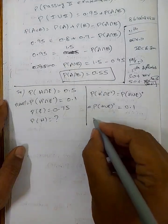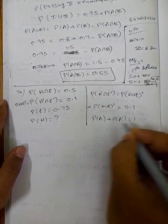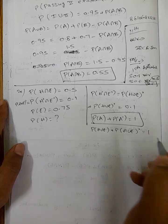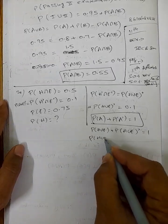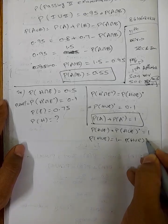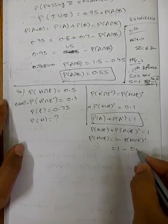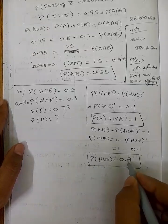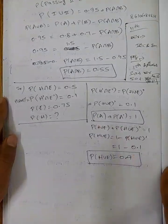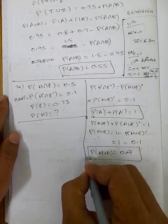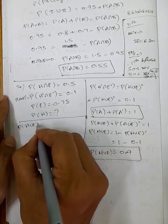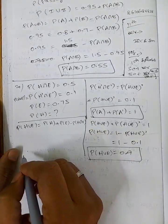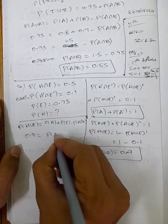We know that P of A plus P of A dash equals 1. So, P of H union E plus P of H union E whole dash equals 1. Therefore, P of H union E equals 1 minus 0.1 equals 0.9. And P of H union E equals P of H plus P of E minus P of H intersection E.